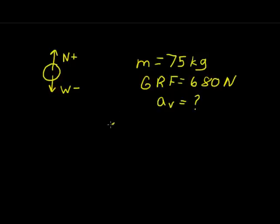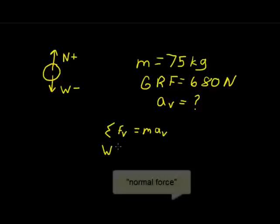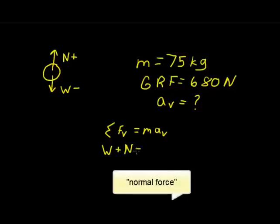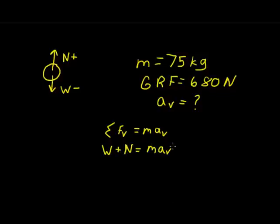The formula we will use is the sum of all the forces in the vertical direction set equal to mass times acceleration in the vertical direction. The forces from our problem are weight plus the ground reaction force, set equal to mass times acceleration, which will help us find vertical acceleration.